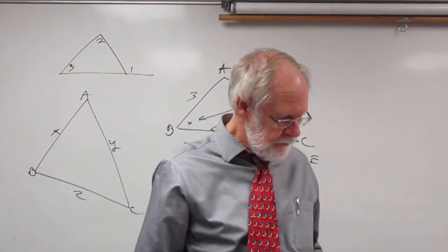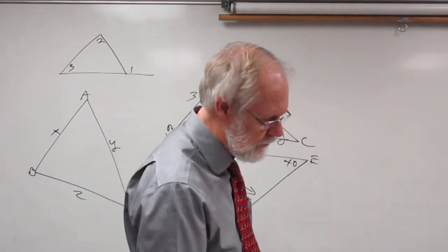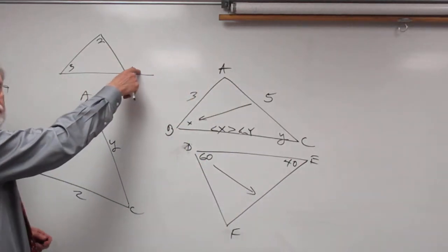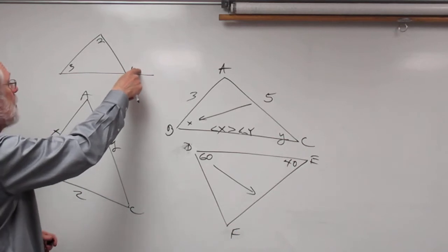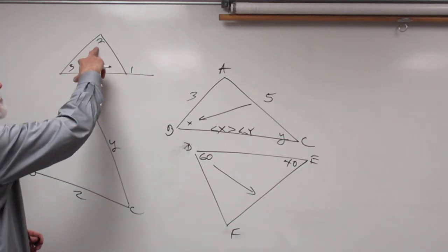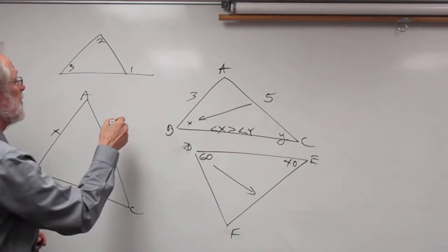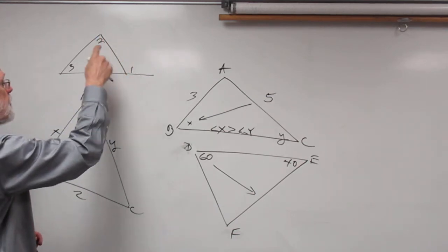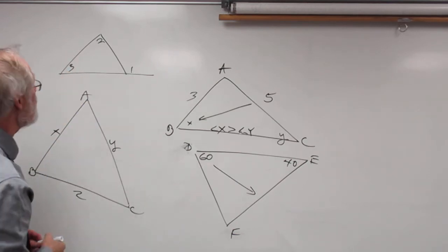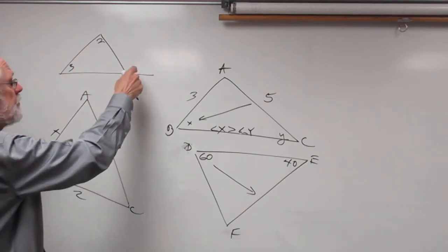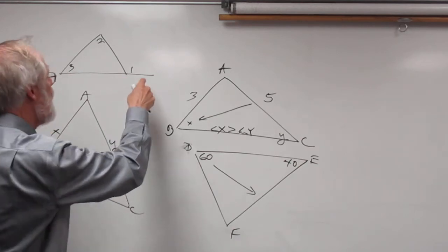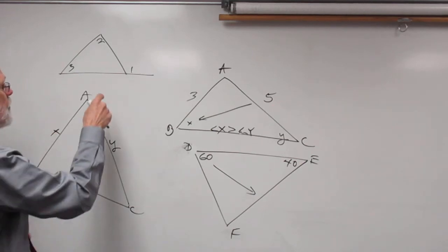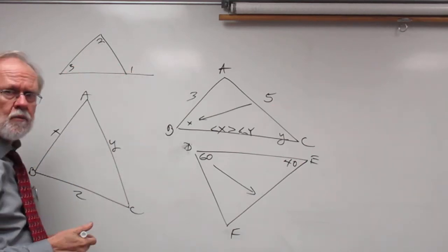Those are two of the theorems. We have two others. The exterior angle inequality theorem says that an exterior angle is greater than either of the two remote interior angles. So the measure of angle 1 is greater than the measure of angle 2, and the measure of angle 1 is also greater than the measure of angle 3. That makes sense because this angle is actually equal to the sum of those two, therefore it must be greater than either one of them individually.